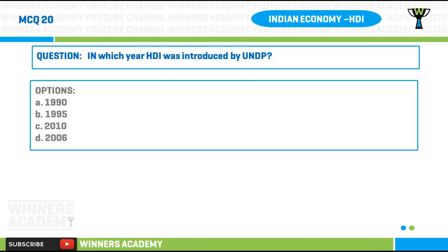Question number twenty: in which year was the Human Development Index introduced by UNDP? Options: A) 1990, B) 1995, C) 2010, D) 2006.